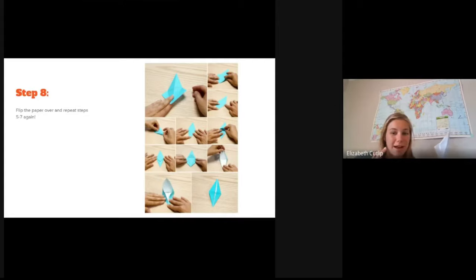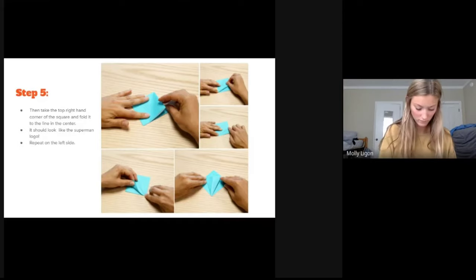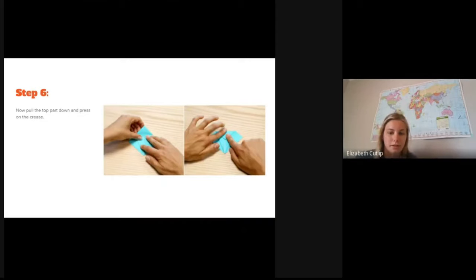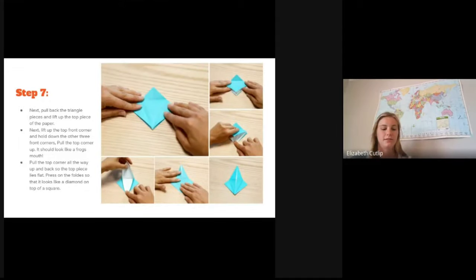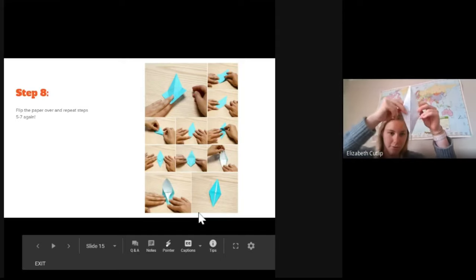And then we are going to repeat five through seven again on the other side. So we're going to flip it over. Same thing with the open flap pointing down. So there's five and six. And finally, seven. And then you should end up with something that looks like this bottom little picture right here or what I'm holding up.